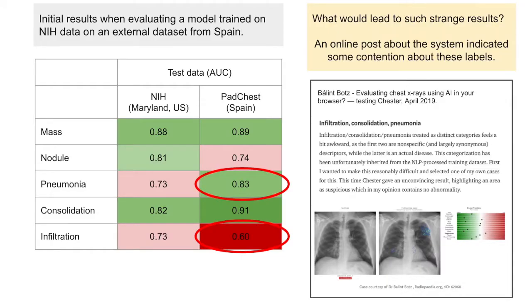This work was motivated when we observed strange generalization performance of a model trained on NIH data, applied to the PADCHEST dataset. The model trained on NIH data predicted pneumonia and consolidation better on the PADCHEST dataset, while predicting infiltration much worse when compared to the NIH dataset itself.